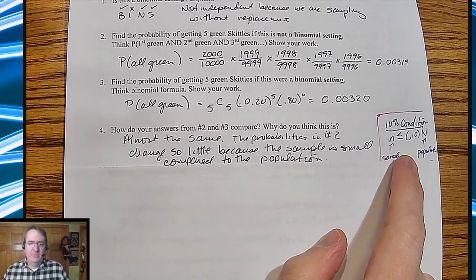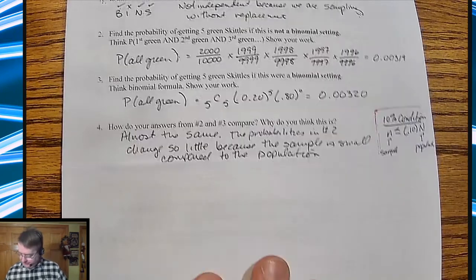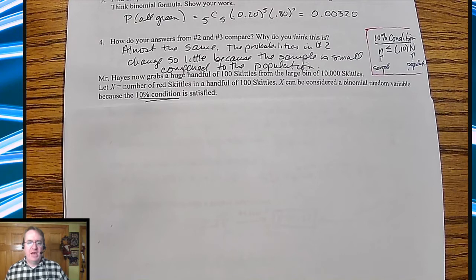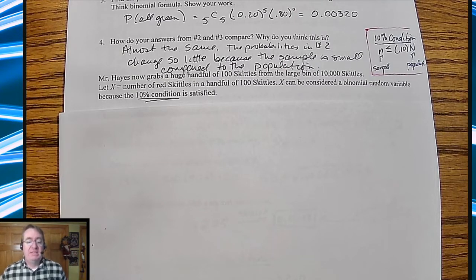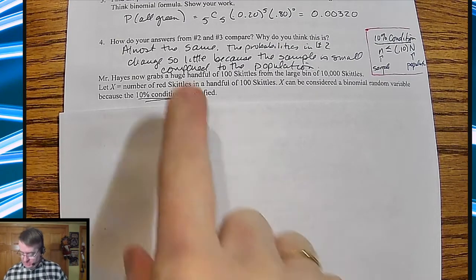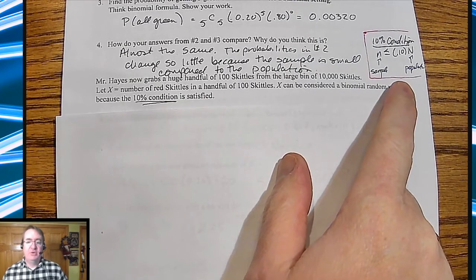Okay, so now I'm going to grab a huge handful of Skittles. I'm going to take a hundred out of the bin of ten thousand. I'm assuming, I guess, I put the five green Skittles back. So let X be the number of red Skittles in a handful of hundred Skittles. X can be considered a binomial random variable because the ten percent condition is satisfied, because a hundred is less than ten percent of ten thousand.